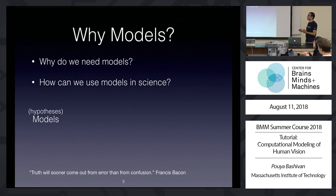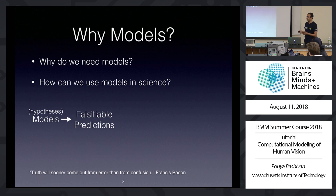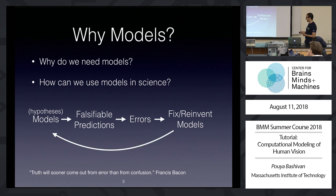The way we should think about models is as modern hypotheses. We build a model as our hypothesis, and then this model gives us a set of falsifiable predictions, which are very important for the progress in science. Once we can make predictions, we can test them, get some successes, and more importantly, get some errors. We use those errors to fix or reinvent our models, and keep doing this loop until we get to the best model — the closest thing to the truth.